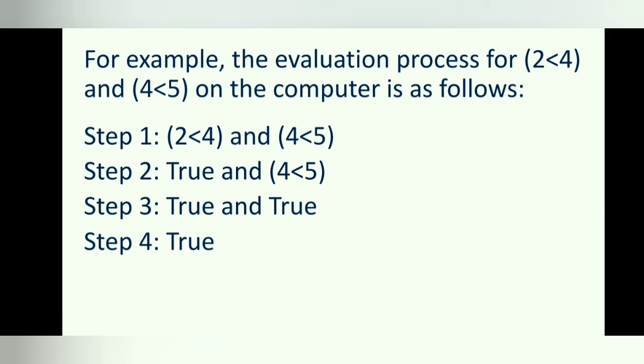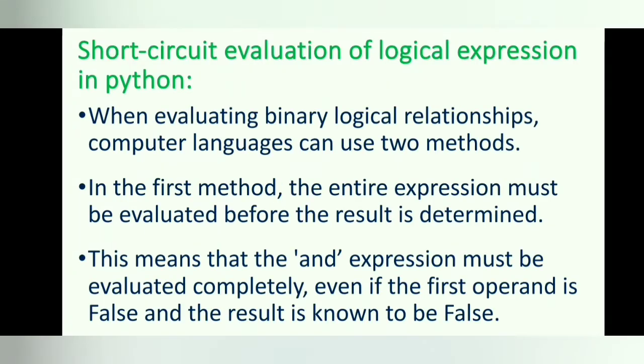First, logical expressions are evaluated left to right. Second, Python evaluates logical operators after all math and comparison operators have been evaluated. Third, the evaluation continues until the entire expression is reduced to one Boolean value. For example, in 2 is less than 4 AND 4 is less than 5: 2 is less than 4 is evaluated first — true; then 4 is less than 5 is evaluated — true. Now AND is evaluated: true AND true gives true. The complete expression is true.